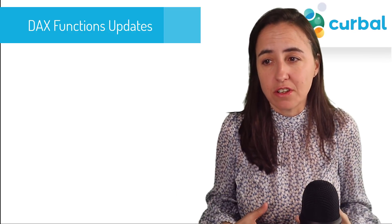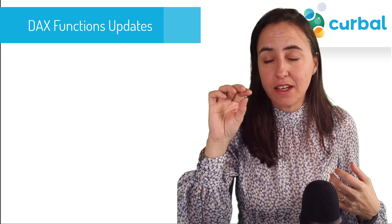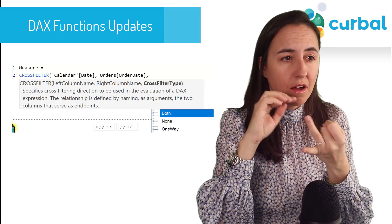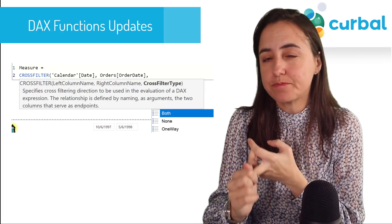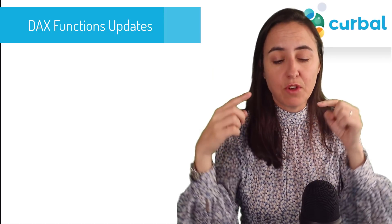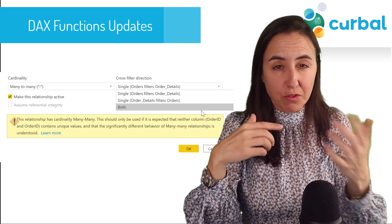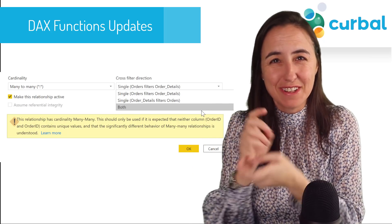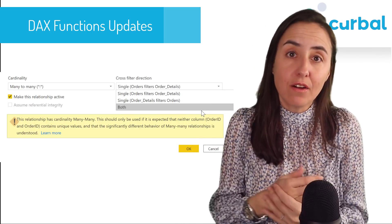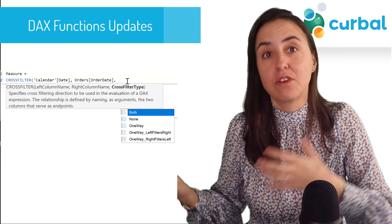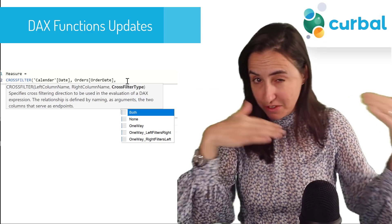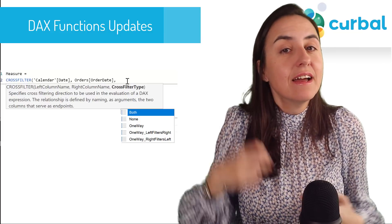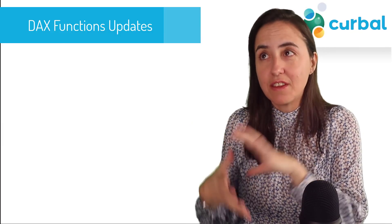There are two DAX updates. The first is the CROSSFILTER function. As you probably know, CROSSFILTER has three options for setting the relationship direction: one-way, none, and both. For many-to-many relationships that didn't work — you had left-filters-right or right-filters-left options in the relationship pane that weren't available in CROSSFILTER. Now they've added them, so you can specify how filters flow on a many-to-many relationship.